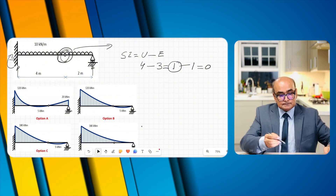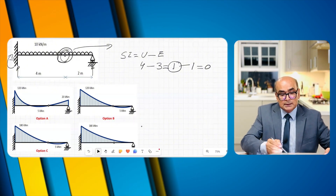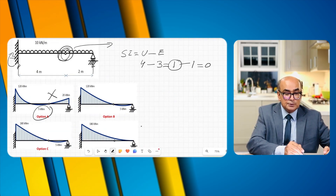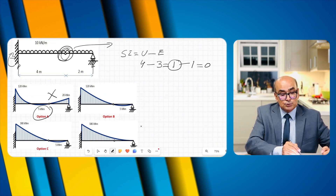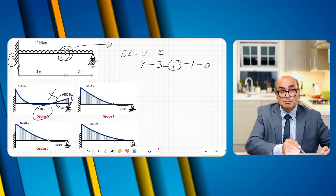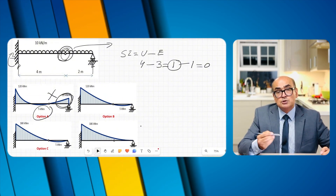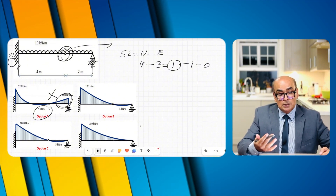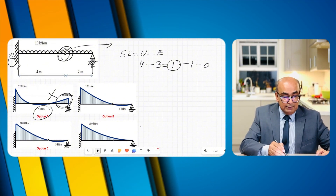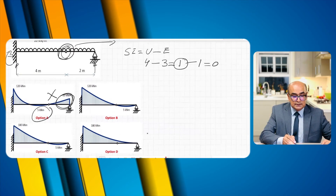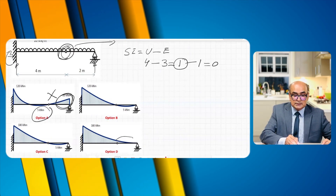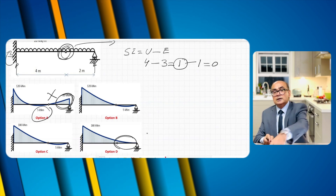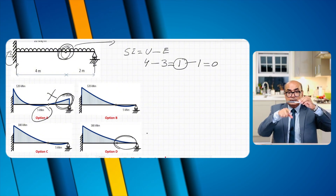The easy way is to first eliminate the options. Option A is not possible because it shows a moment at the roller support — pin and roller supports have no resisting moment. Option D can also be eliminated because it shows no sagging moment along the span.